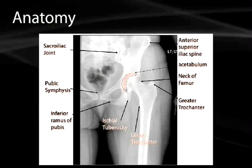Here we can see an AP view of the pelvis where you can pick up the anterior superior iliac spine and the lucency related to the sacroiliac joint. Oftentimes you'll see C-shaped sacroiliac joints because of the disposition between the posterior and lateral components. The anterior sacroiliac joint tends to be more lucent and more lateral than the posterior.